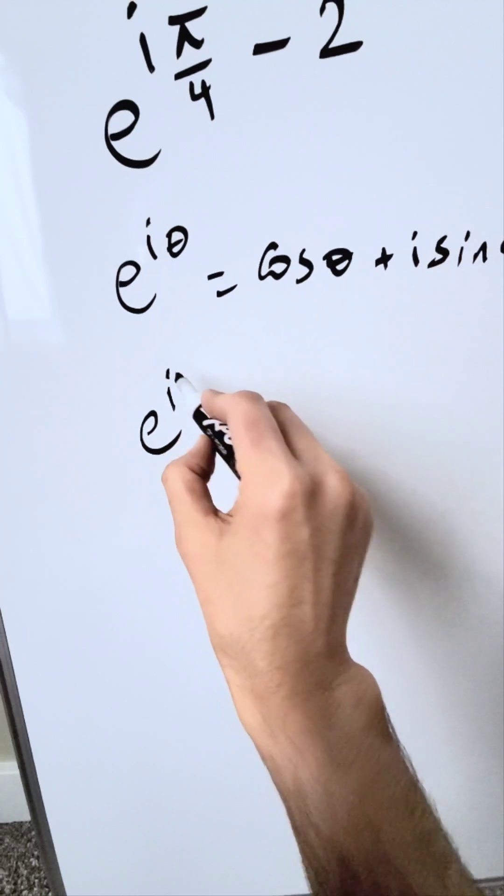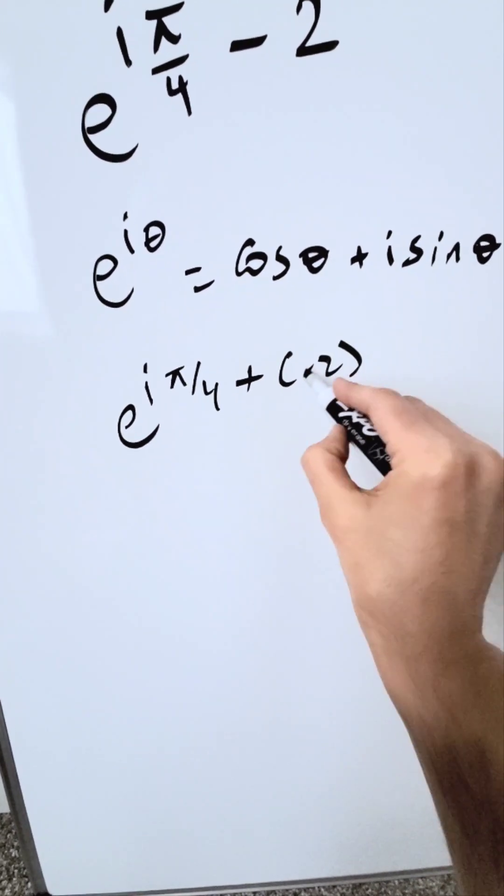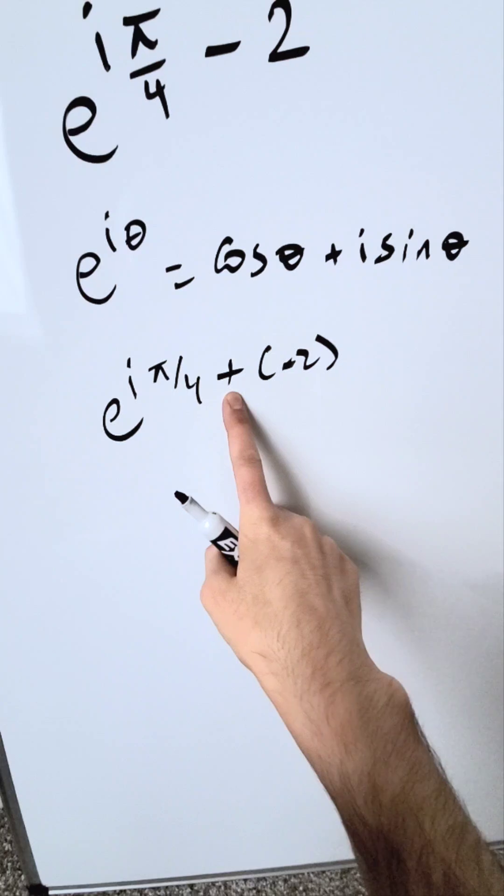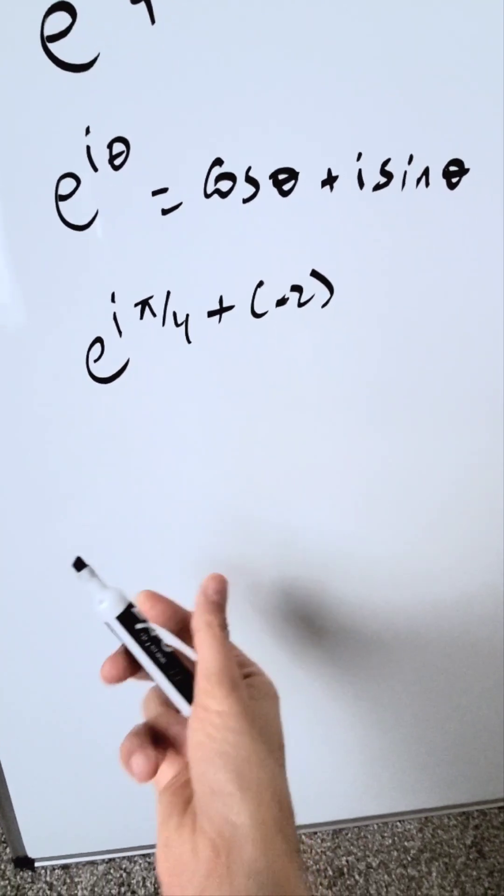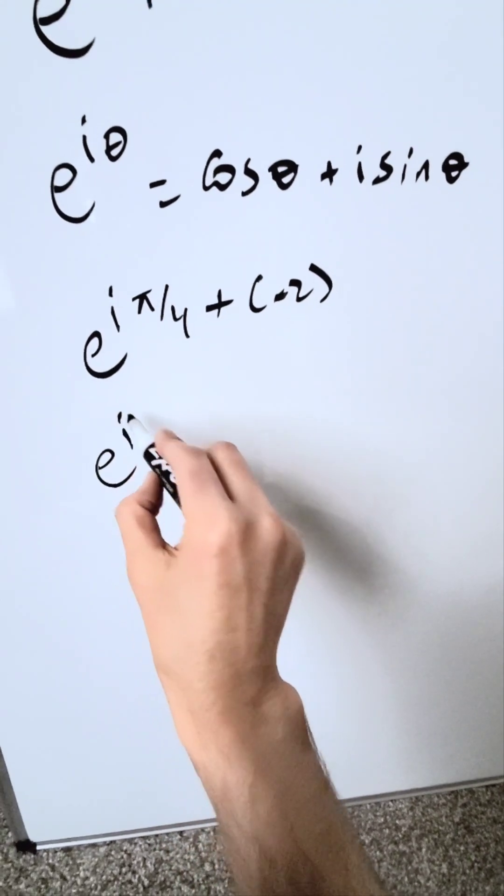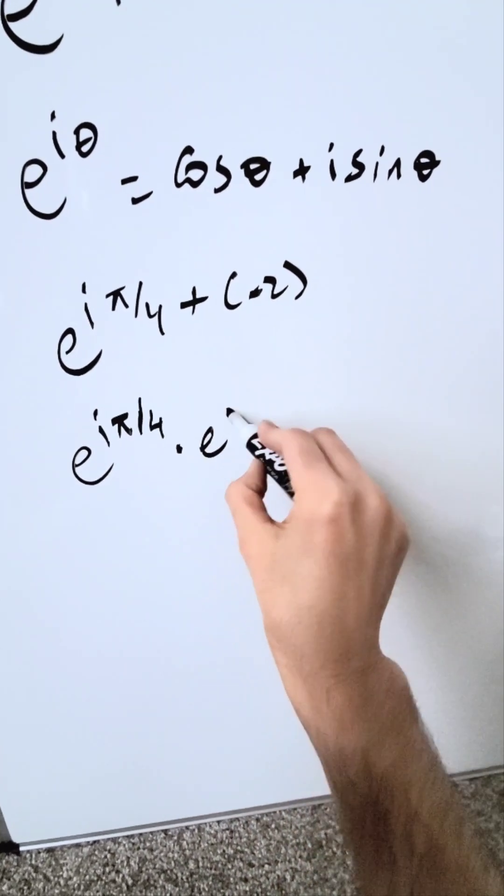We can rewrite everything as e exponent i pi over 4 plus minus 2. When you are multiplying bases which are equivalent, their exponents add, which means all of this has come from this expression, e exponent i pi over 4 times e exponent minus 2.